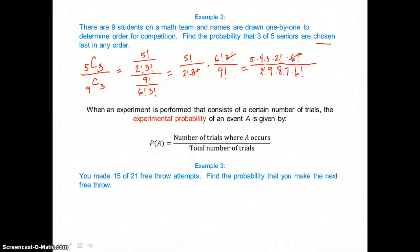Okay now canceling. I'll cancel 6 factorial top and bottom. I'll cancel 2 factorial top and bottom. I can cancel a factor of 4 that goes into 8 twice, and I can cancel a factor of 3 that goes into 9 three times. So it looks like I'm left with 5 in the numerator and 6 times 7 or 42 in the denominator. So there's a 5/42 chance probability of 3 of 5 seniors to be chosen last in any order.